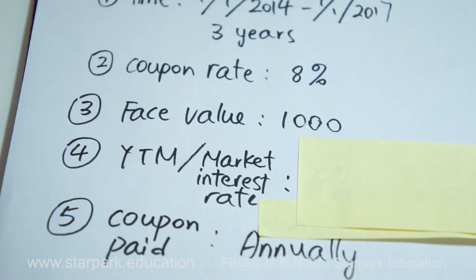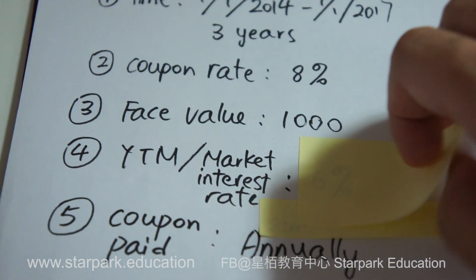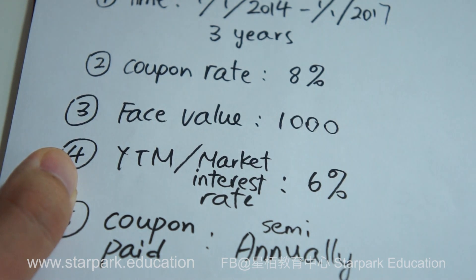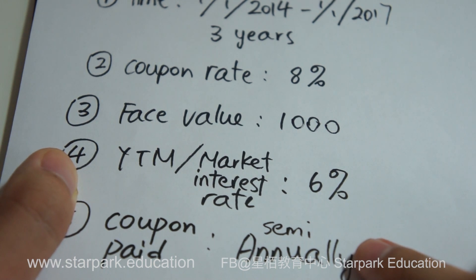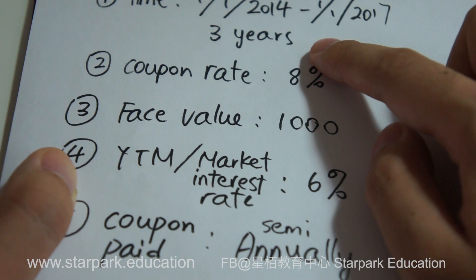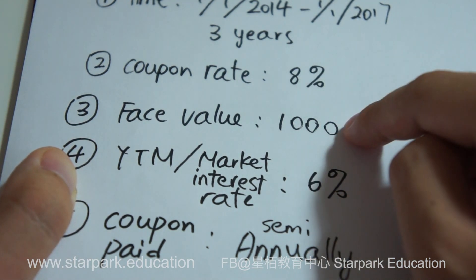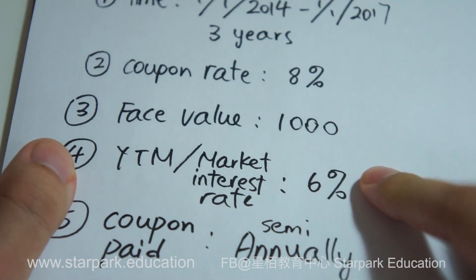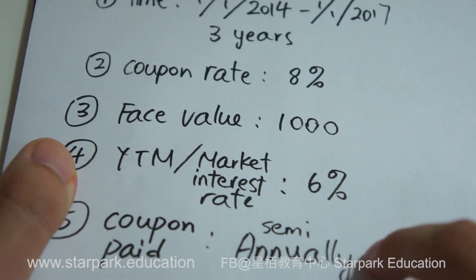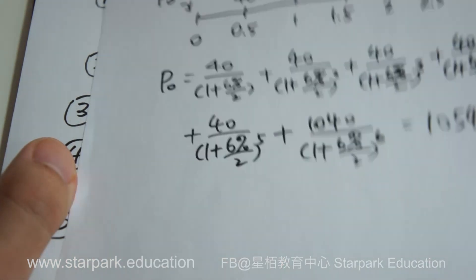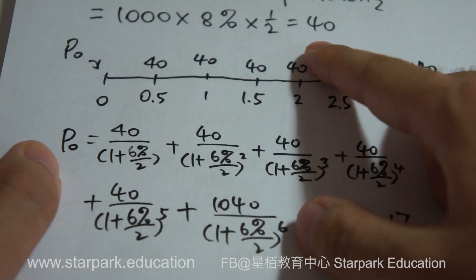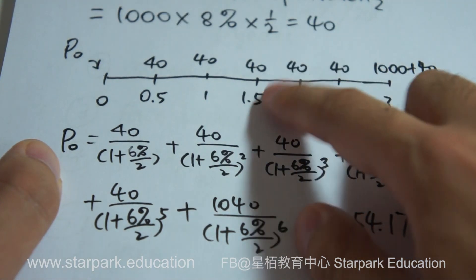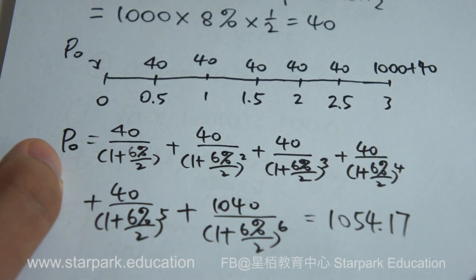Then press I/Y to compute, and you get the answer of 6%. Now, what if the coupon payment frequency is different — say semi-annual? In that case, you receive the coupon two times per year. The data are the same: 3-year term, 8% coupon rate, $1,000 face value, 6% yield to maturity — but payments are semi-annual. From the previous video, the bond price in this case is $1,054.17. The coupon received is now $40 instead of $80, and you receive six coupon payments in total.